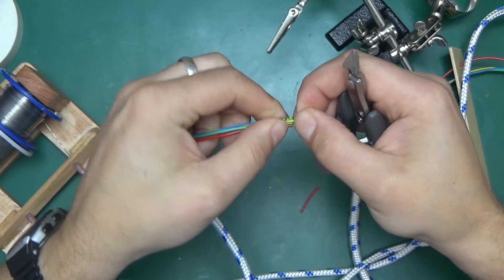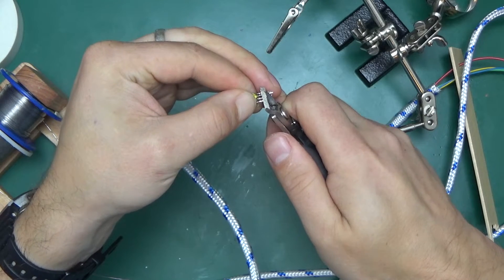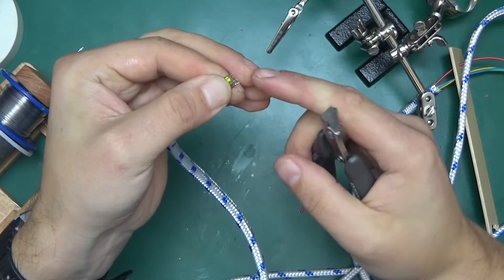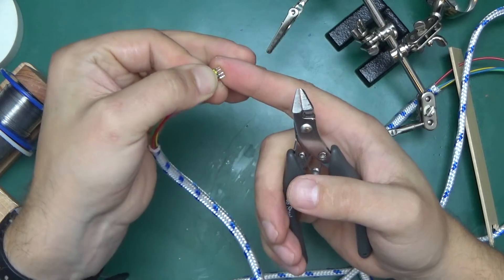Let's cut all of those to length. It's much easier to tin a longer piece of wire and then cut them. This way you get a much nicer finish. We won't need much for the micro USB connector, which I'm going to be soldering on first.